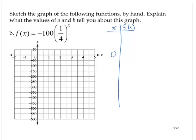0: 1 fourth to the 0 is 1, so negative 100 times 1 is negative 100. If x is 1, we would have negative 100 times 1 fourth to the first power. So that's negative 100 times 1 fourth is negative 25.